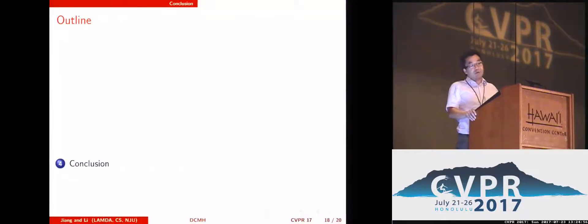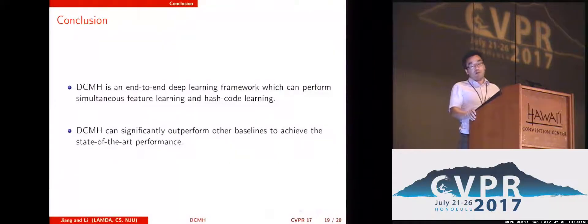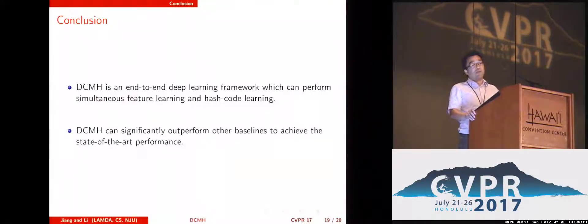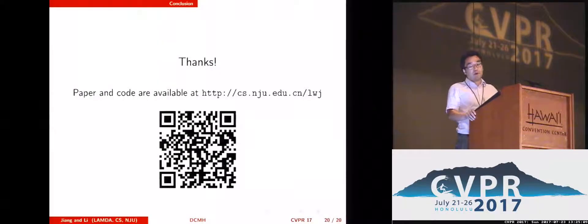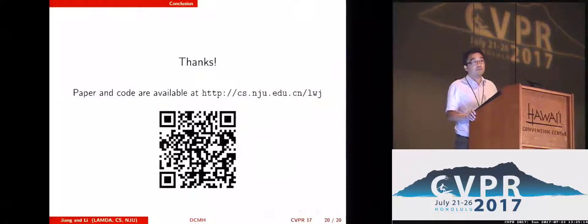In conclusion, in this paper we propose an end-to-end deep learning framework which can perform feature learning and hash code learning simultaneously, and it achieves the best performance in real applications. If you are interested in our work, please come to our poster. Thanks.